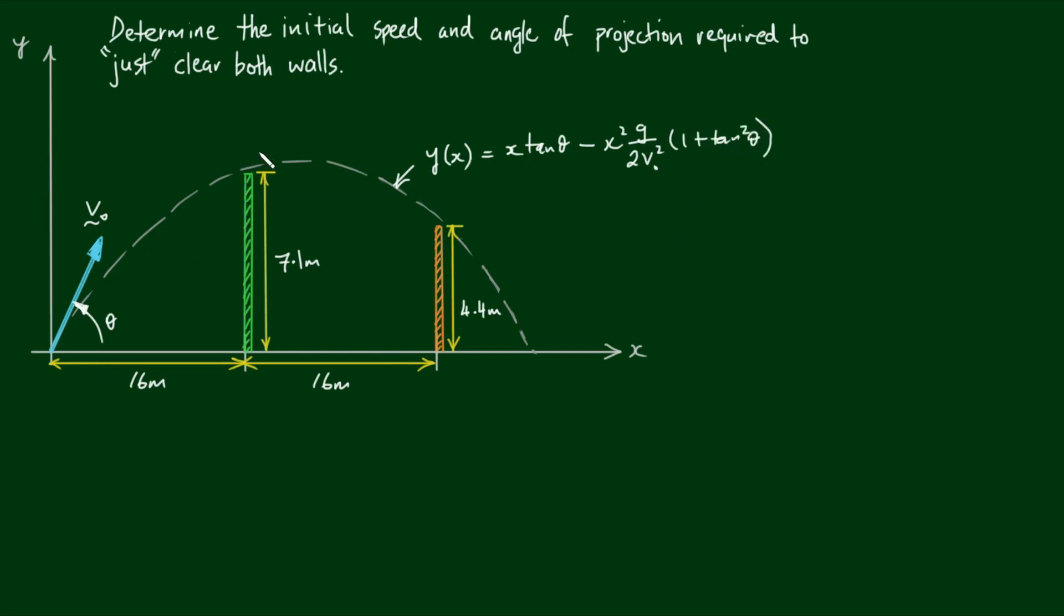So we need this projectile to pass through or go above and beyond two defined points. We have one here with coordinates 16, 7.1. And we have another here where the coordinates are 32, 4.4.